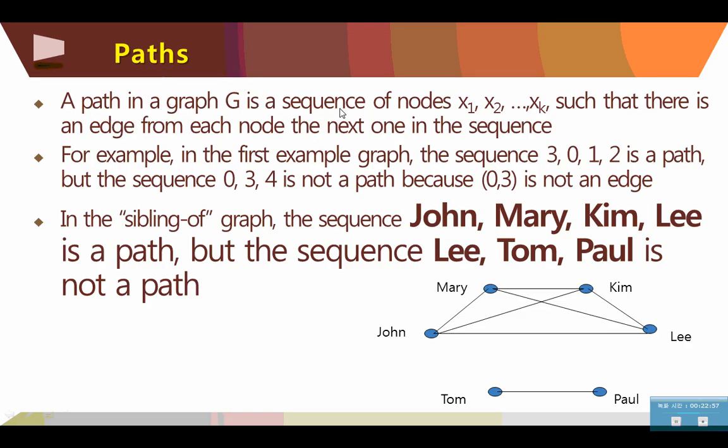And path. A path in a graph G is a sequence of nodes x1, x2, up to xk, such that there is an edge from each node to the next one in the sequence. For example, in the first example graph, the sequence 3, 0, 1, 2 is a path, but the sequence 0, 3, 4 is not a path, because 0,3 is not an edge. In the sibling graph, the sequence John, Mary, Kim, Lee is a path. John, Mary, Kim, Lee is connected. It makes a path. So, this sequence is a path. But the sequence Lee, Tom, and Paul are not a path, because there is no edges between Lee and Tom.